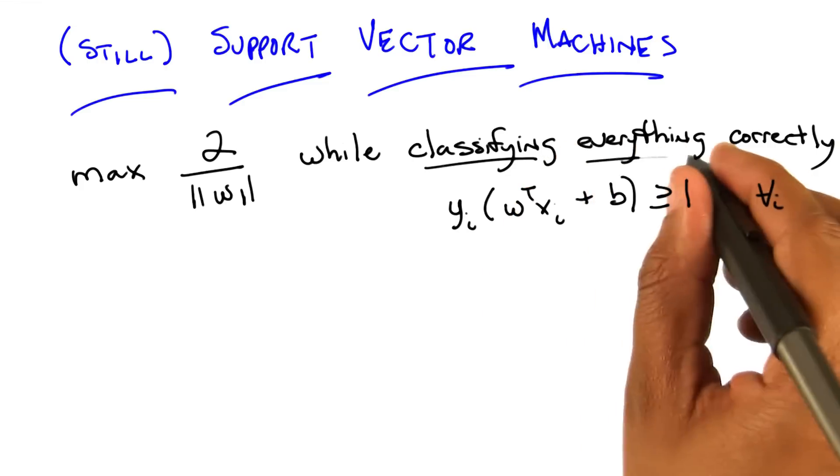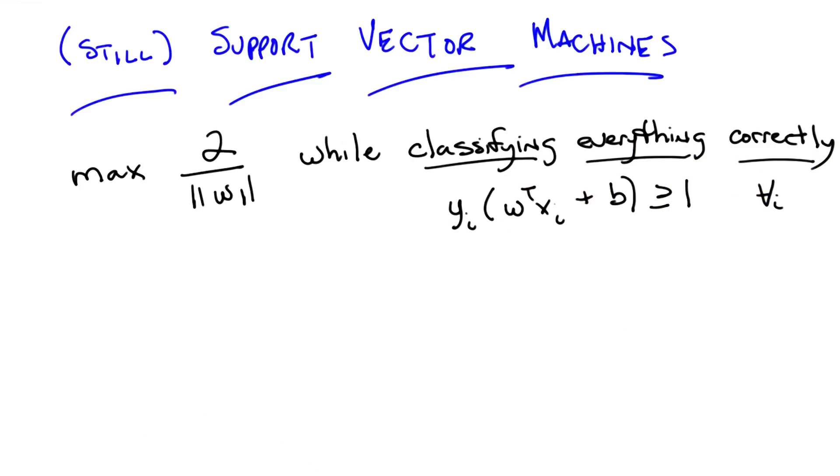So, what I've written here is y_i times w transpose x_i plus b greater than or equal to 1 for all i. That is, for all of our training data examples. So, why does this work?